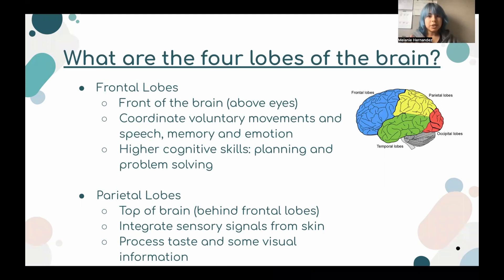Our frontal lobe, by the name, is located in the front of our brain, above our eyes. It controls our voluntary movements, speech, memory, and emotion. It is also responsible for our higher cognitive skills, such as planning, impulse control, and problem solving.